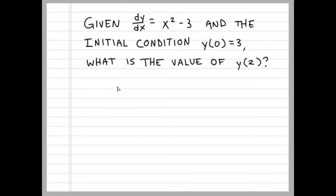Before we talk about Euler's method, we're going to do a recap of something we should already know. Given dy/dx equals x squared minus 3 and the initial condition y(0) equals 3, what is the value of y(2)?